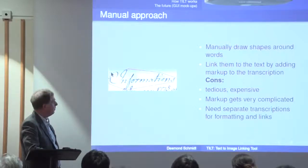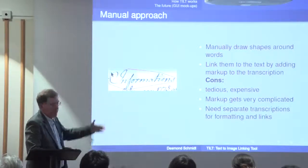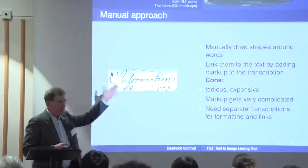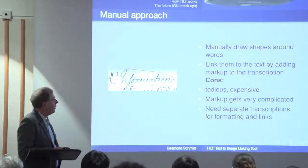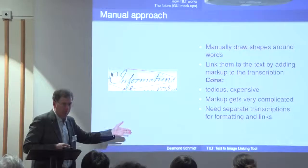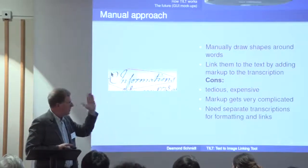The approach followed by others is generally manual: you draw a box or circle around a word and link it manually to the word in the text. This takes an enormous amount of time — if anyone's done a couple of pages, you go quite mad. Crowdsourcing has even been suggested, though I think you'd go nuts after half a page. The markup also gets very complicated: you have to describe the shape, its position in the text, and vice versa. Usually two separate transcriptions are needed — one for formatting display and another for the links — which is generally impractical.